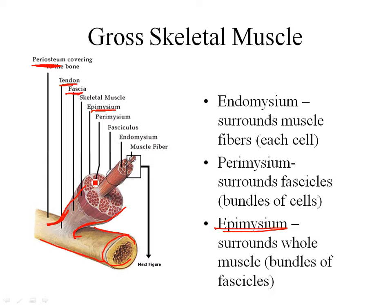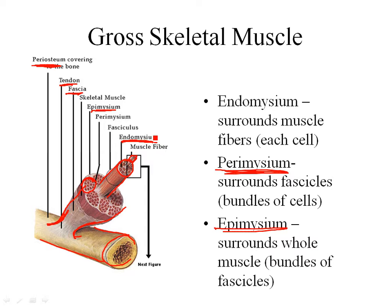Looking inside the muscle, what might look like one cell is actually a bundle called a fasciculus — that's a bundle of muscle cells. Each fasciculus is surrounded by connective tissue called perimysium. Going even further in, each one of those little rods inside the fasciculus is actually a muscle cell. We use the terms muscle cell and muscle fiber interchangeably. Each muscle cell is surrounded by connective tissue called endomysium, so endomysium surrounds each individual cell.